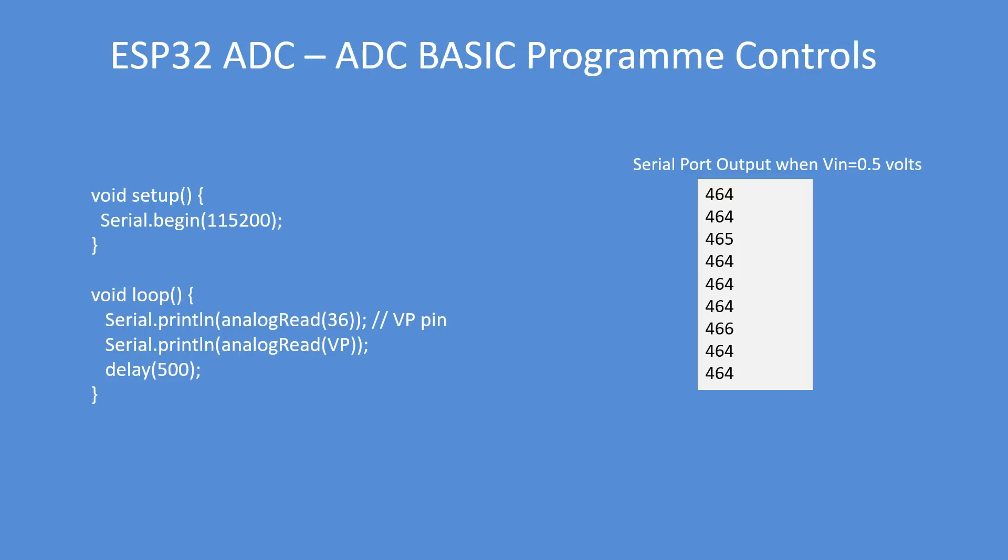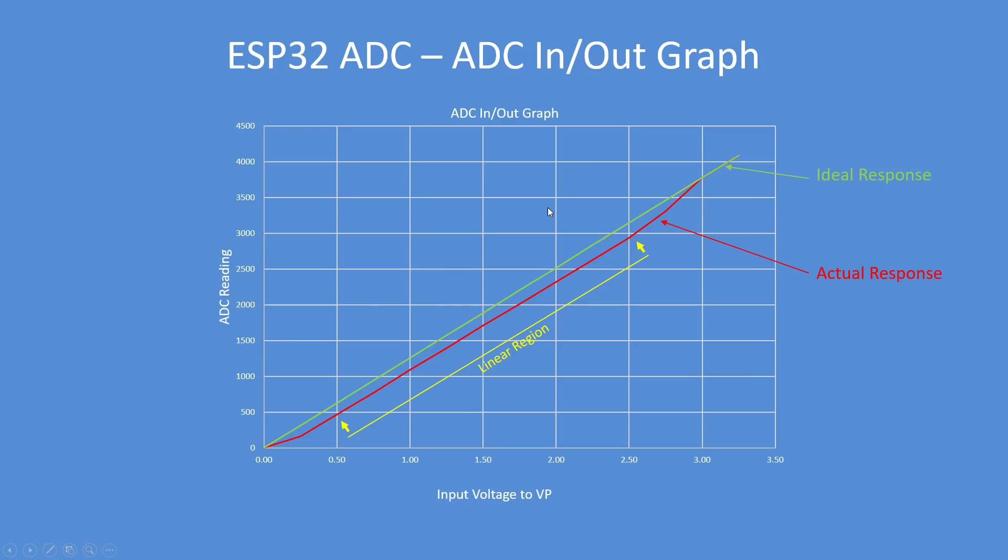In its basic form it's very easy to use, no need to define the input pin. I'm using pin 36 or VP, I've used two examples there. The result is analog read 464 for 0.5 volt input to pin VP.